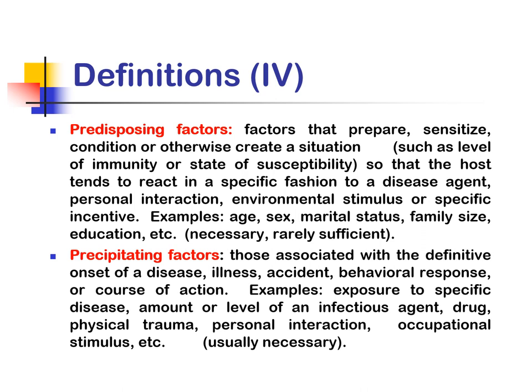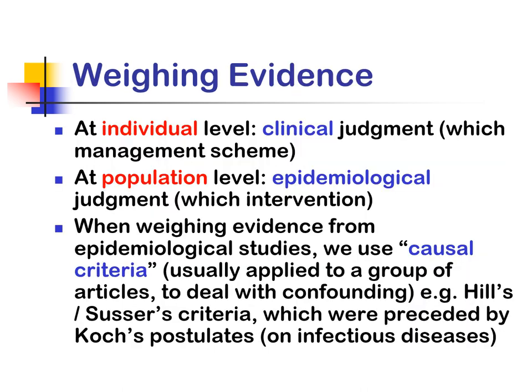Predisposing factors are factors that prepare, sensitize, condition, or otherwise create a situation so that the host tends to react in a specific fashion to a disease agent, personal interaction, environmental stimulus, or specific incentive. Examples are age, sex, marital status, and family size. Precipitating factors are those associated with the definitive onset of a disease, illness, incident, behavioral response, or course of action. Examples include exposure to a specific disease agent, amount or level of an infectious agent, drug, physical trauma interaction, and occupational stimulus.